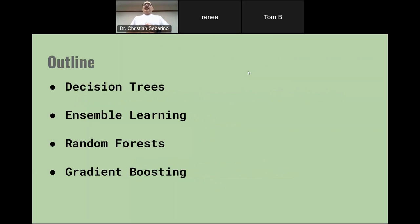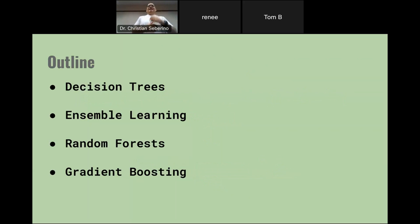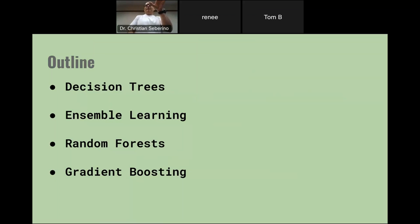Here is an outline. I'll first be discussing decision trees, then something called ensemble learning, and then I'm going to talk about two of the most amazing methods you've ever heard of: random forests and gradient boosting. In order to understand everything that follows, you really need to understand decision trees — so listen up to this part. And by the way, this is easy stuff. That's one of the things you're going to like about these powerful methods: they're relatively easy to understand.